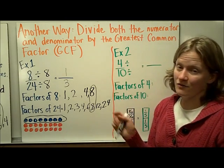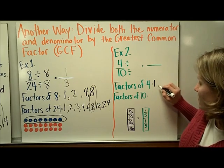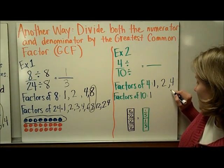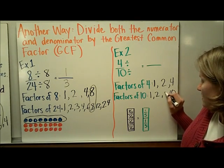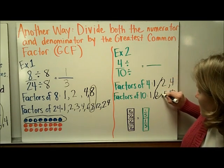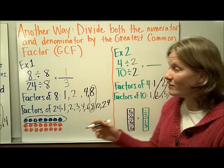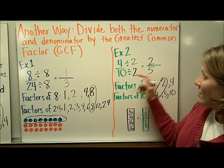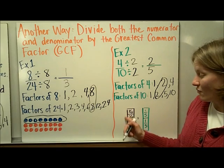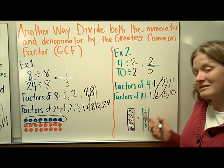A second example: 4 tenths. The first step is to find the factors. If you want to find a factor, you've got to break it down. Factors of 4: 1 and 4, and 2 times 2. Factors of 10: 1 times 10 and 2 times 5. The greatest common factor they both have is 2, so I'll divide the numerator by 2 and the denominator by 2. 4 divided by 2 is 2, and 10 divided by 2 is 5. So 4 tenths in simplest form is 2 fifths. In fraction towers, you start with 4 purple tenth pieces and they simplify to 2 green fifth pieces — simpler because it's fewer pieces.